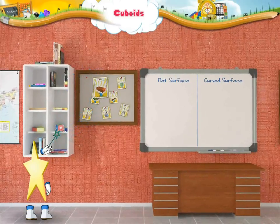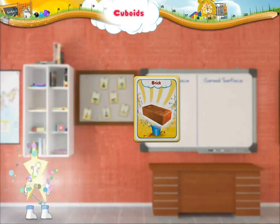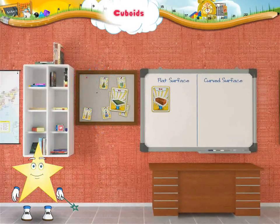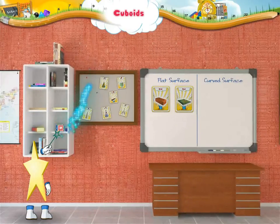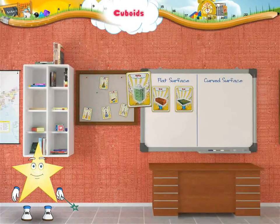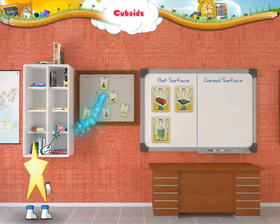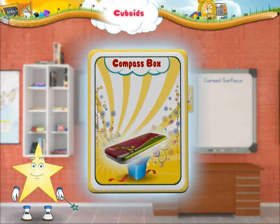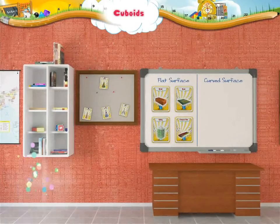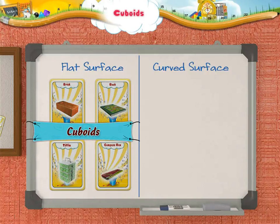Starry, you have grouped picture of a brick, picture of a book, picture of a tiffin box, and picture of a compass box under flat surface. These objects with flat surfaces are called cuboids.